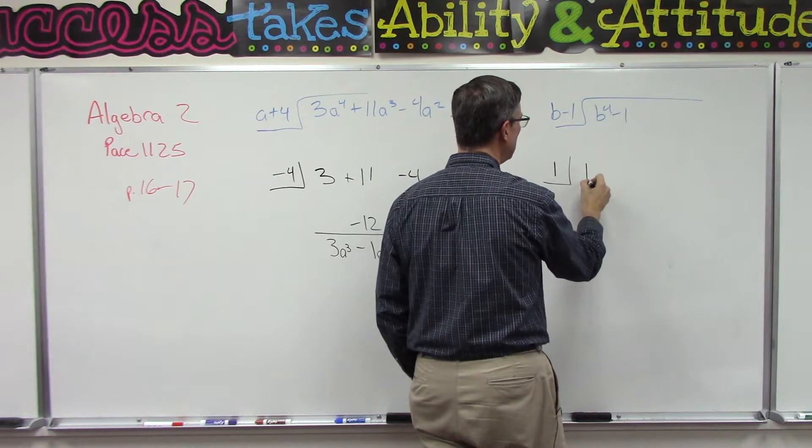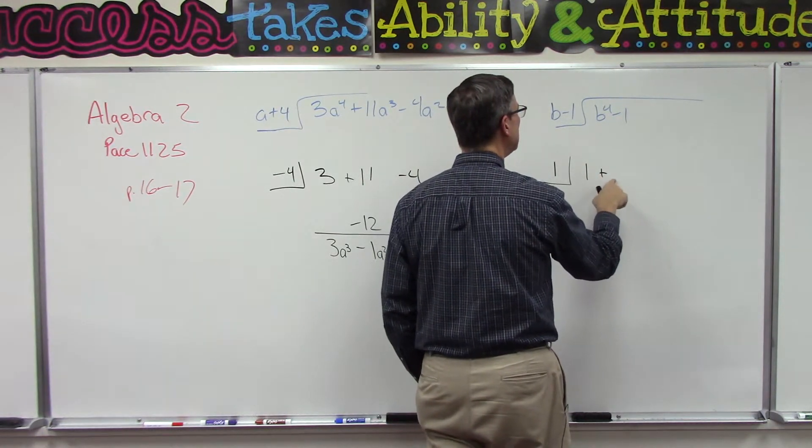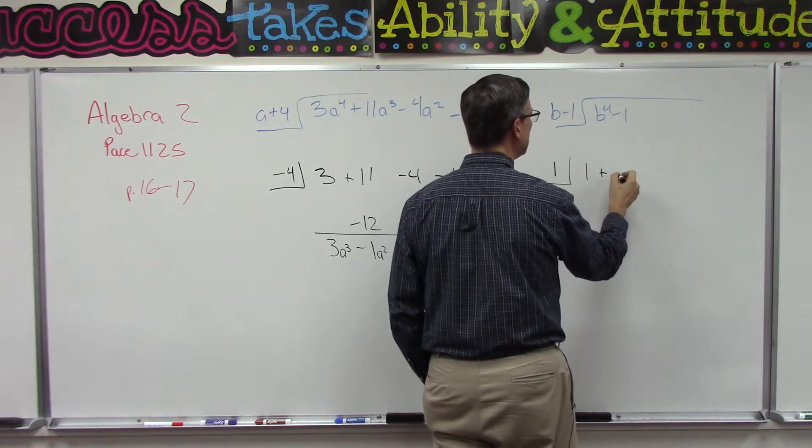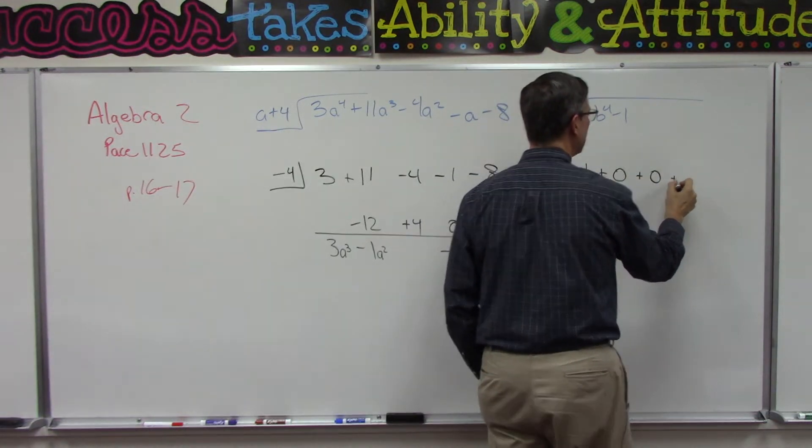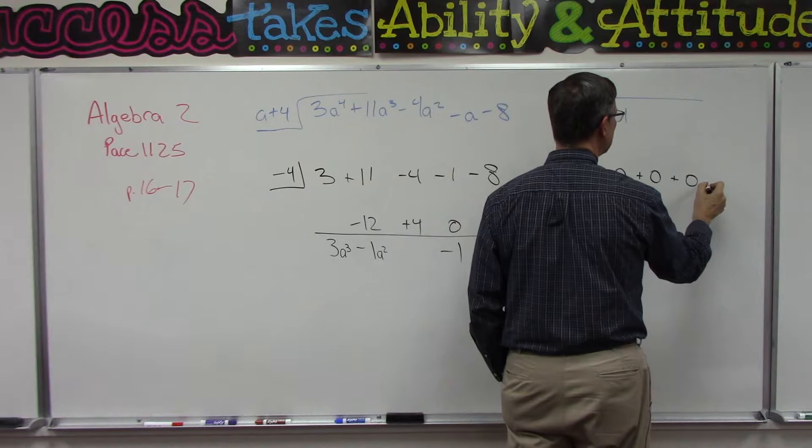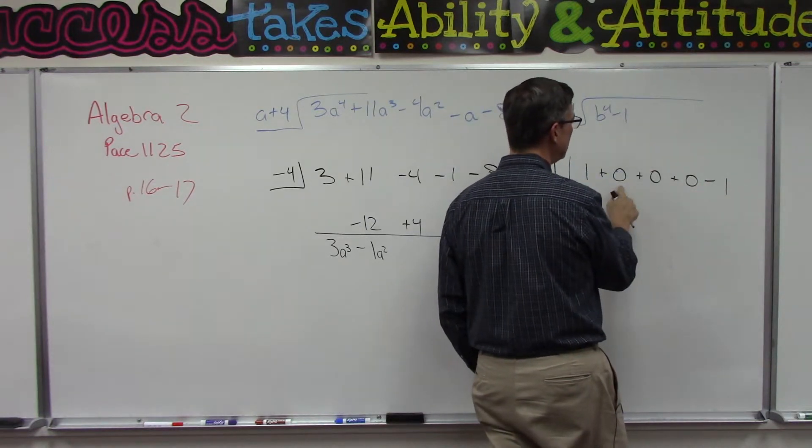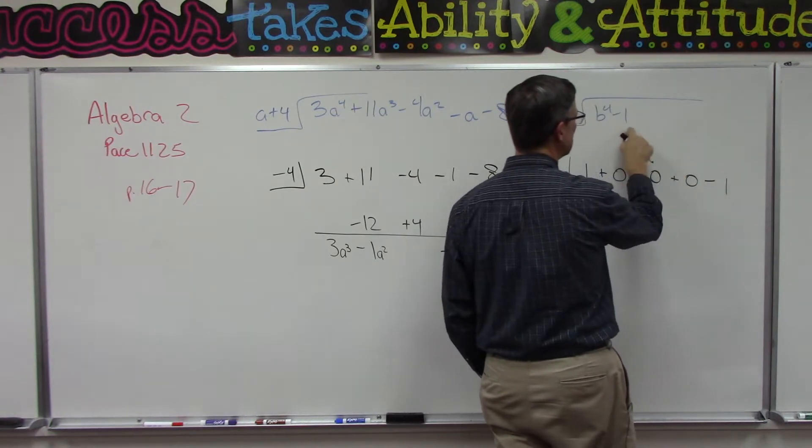The coefficient on b to the fourth is 1. Now what is b to the third? It's not there, so I need to put a 0 for the third, 0 for the second, 0 for the first, and then negative 1. This is b to the fourth, b to the third, b to the second, b to the first, and this is the constant negative 1.